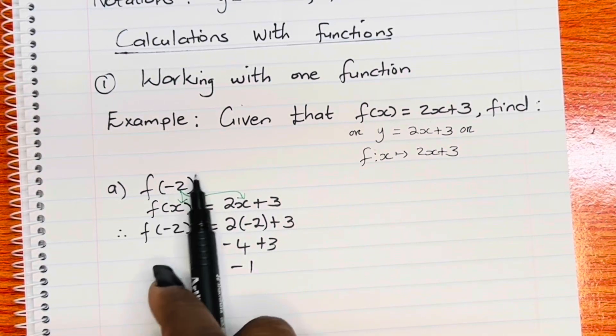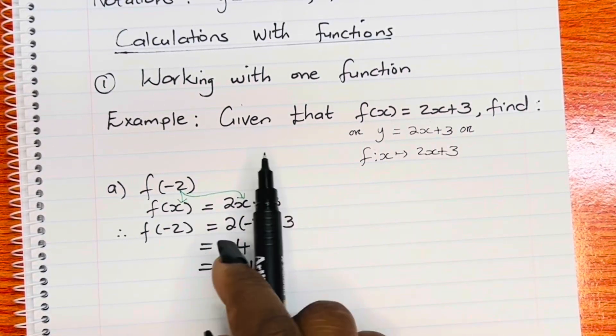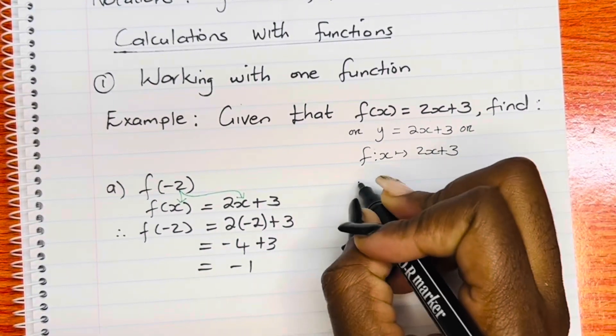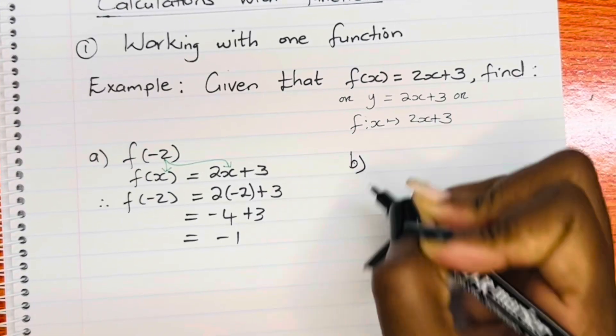Remember, math is a language that you should be able to speak. So if you know that the original was f of x equal to 2x plus 3, it just means now f of negative 2 will replace x with negative 2.